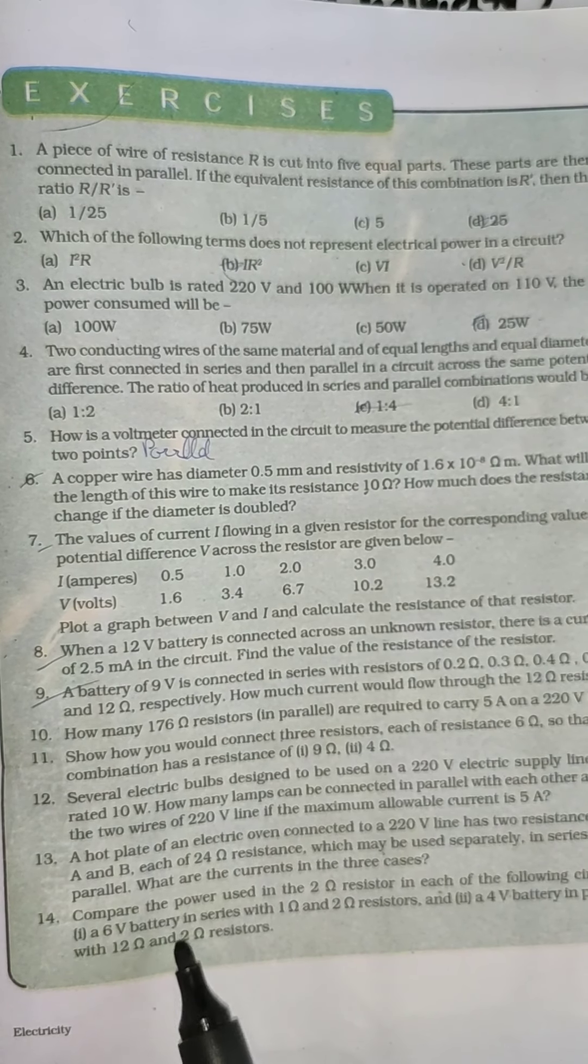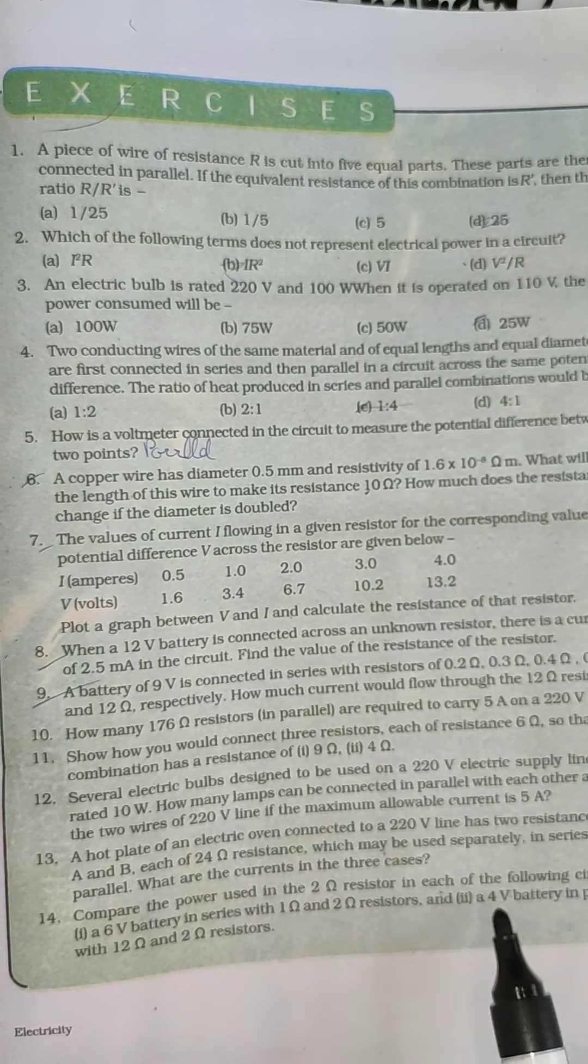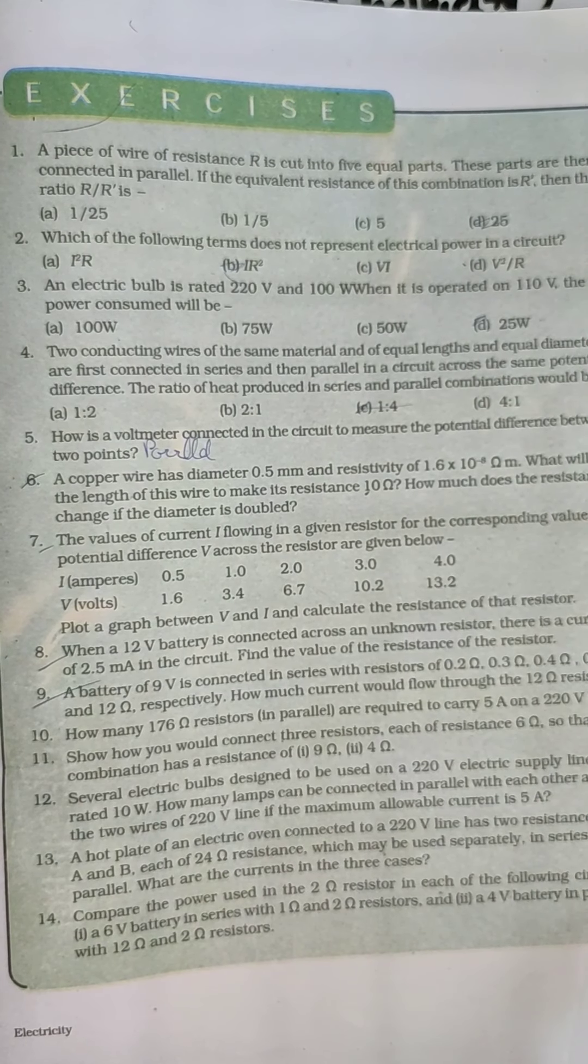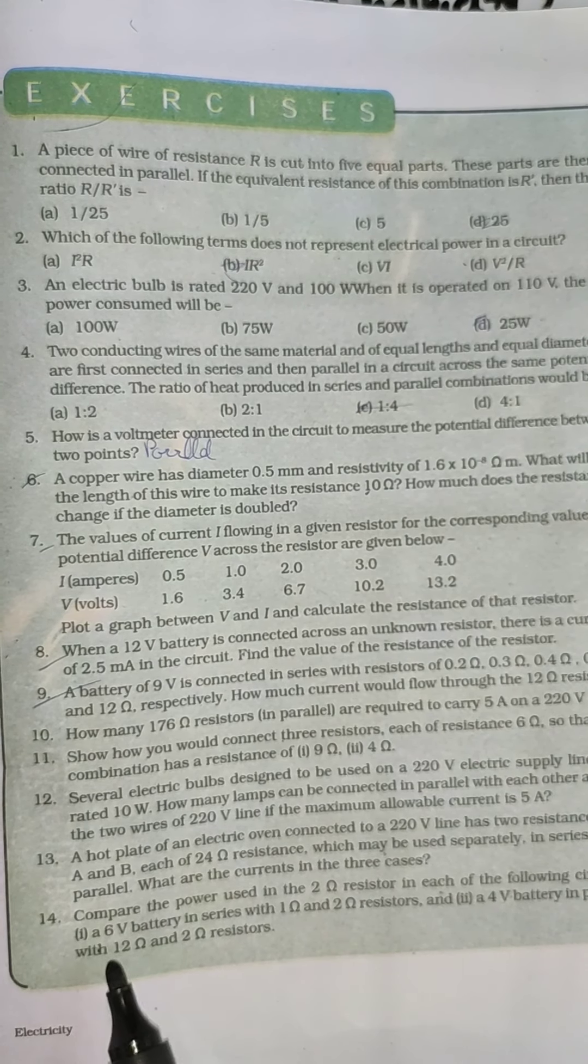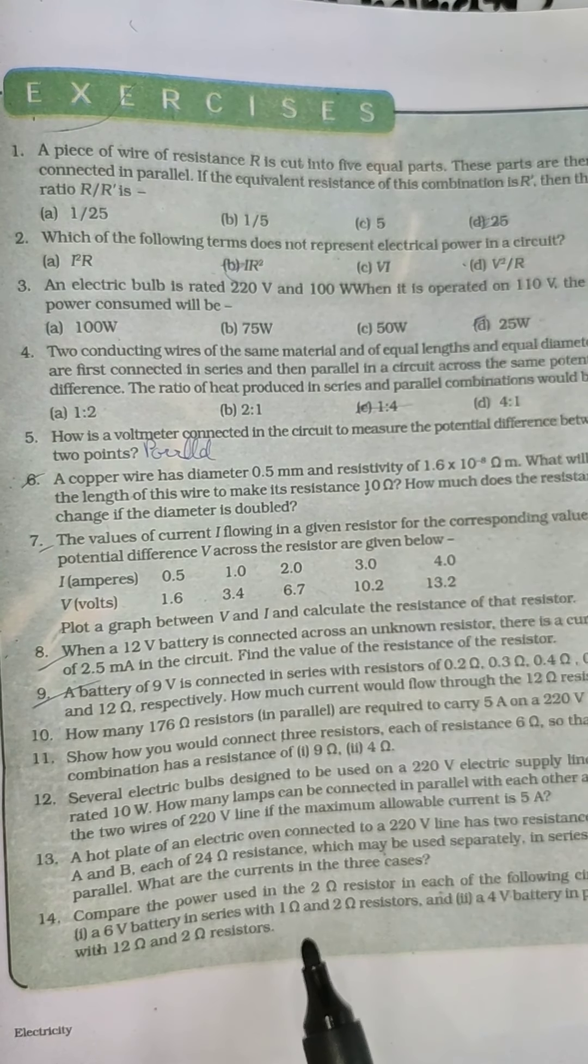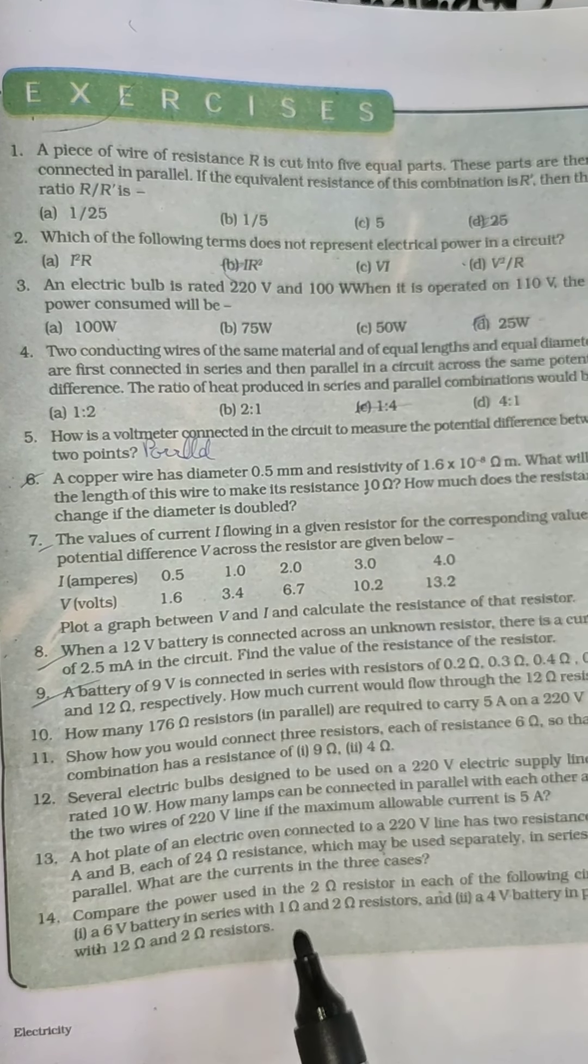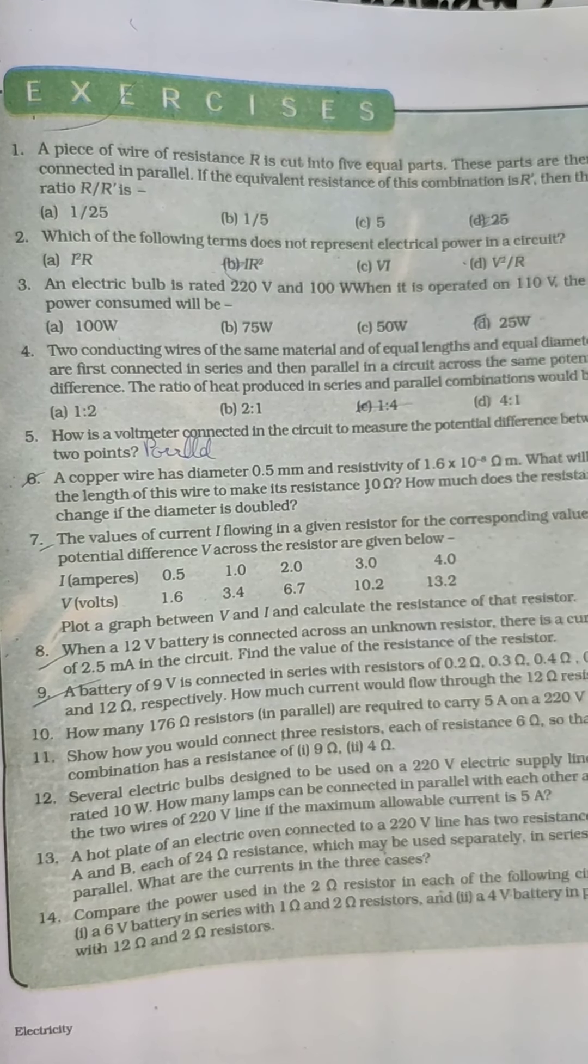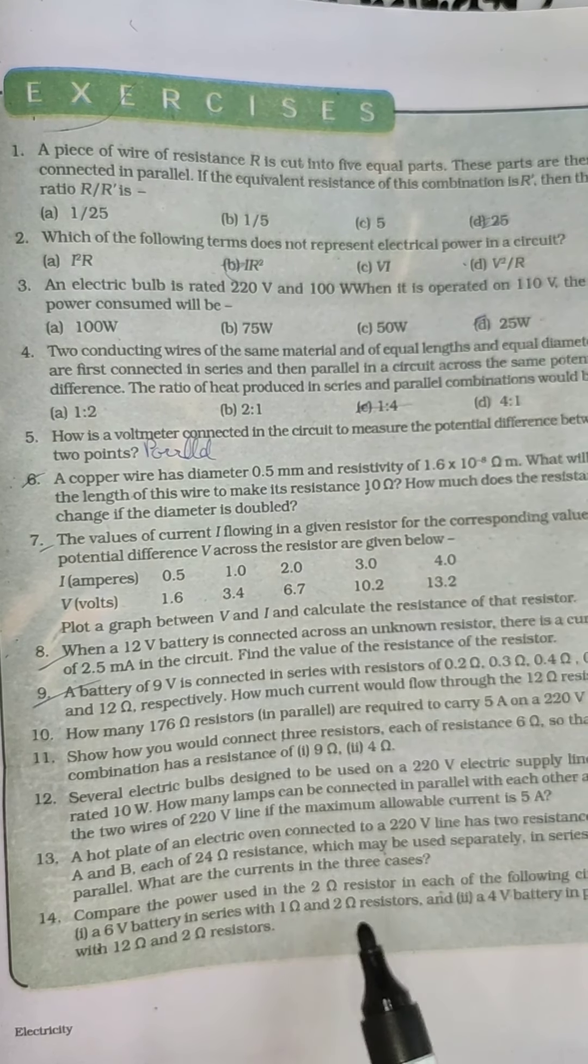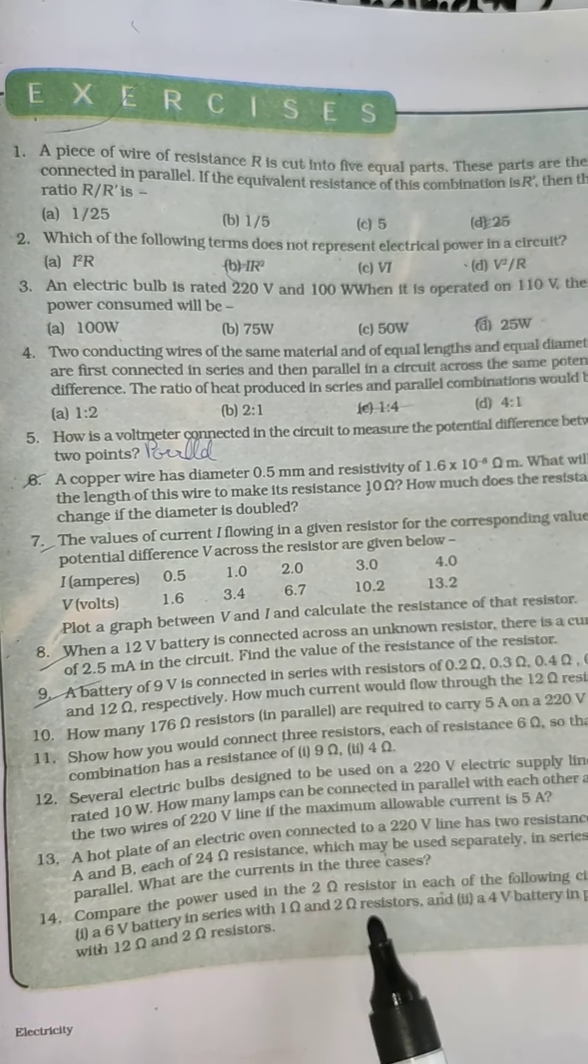Now question number 14. Compare the power used in 2 ohm resistor in each of the following circuits. First circuit is a 6 volt battery in series with 1 ohm and 2 ohm resistors. We have to find power across this 2 ohm resistor.